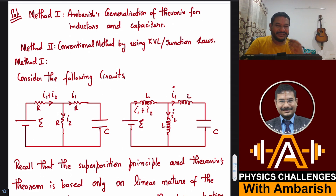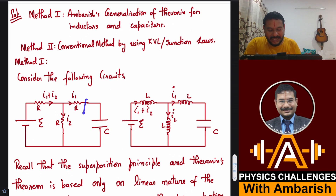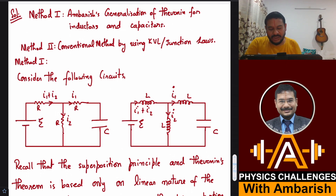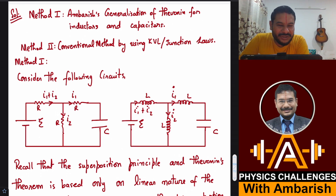Now let's try to see why we can apply Thevenin here using inductors. We Thevenize the capacitor — we pluck it out and see what is the open circuit voltage across those terminals. We call that E Thevenin. Then, looking back into the circuit with the battery shorted, we find the effective resistance. Thevenin's theorem itself was based on the superposition theorem, and I'll also give the link to the proof of Thevenin's theorem that I did long ago.